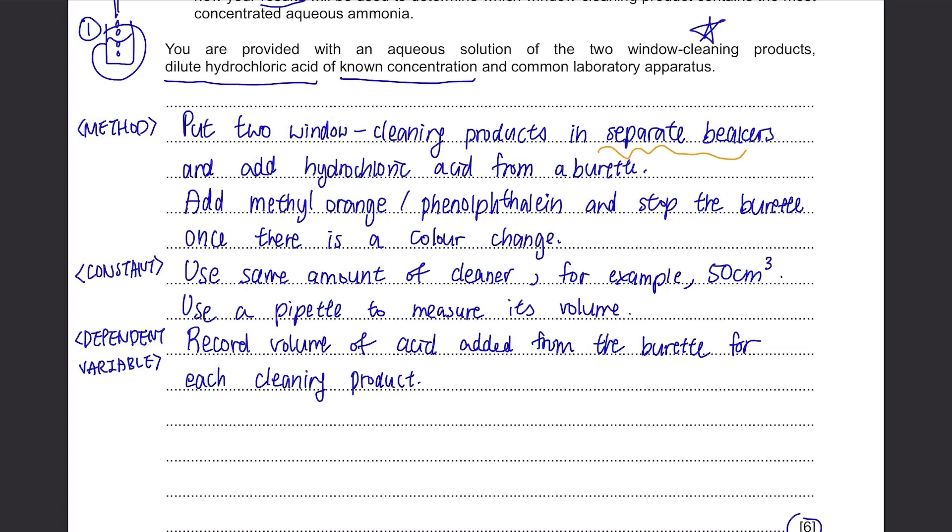Finally, in conclusion, it needs to be related to the reading that we found. The product that used bigger volume of acid is more concentrated. This is because it means that the product required more volume of acid to be neutralized and its indicator to change its color, which is all because it's more concentrated than the other one.